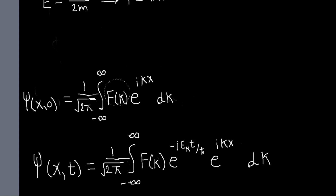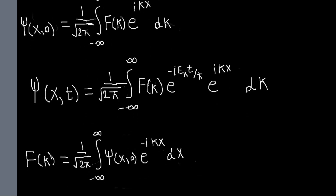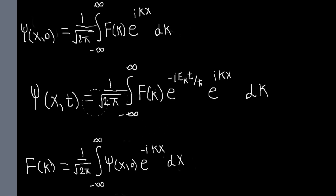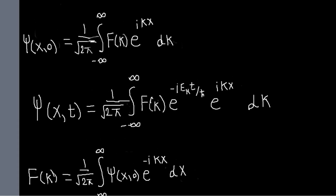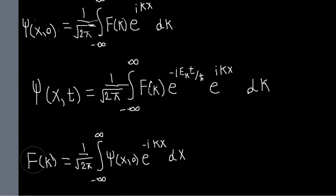By looking at this equation, we can see that we get these expansion coefficients by taking the Fourier transform of ψ(x). This is written specifically as the inverse Fourier transform. So we have this equation for f(k) given ψ(x): we start with our initial wave function, take the Fourier transform, and that gives us the coefficients — telling us how to expand the wave function in terms of momentum eigenstates. Then we use the time evolution equation to trivially solve the Schrödinger equation.